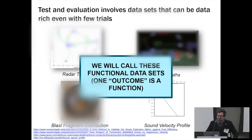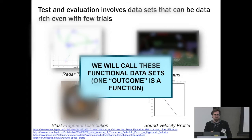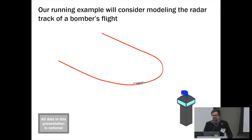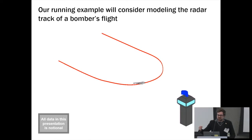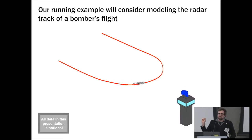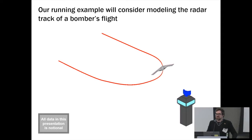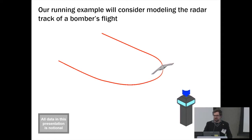I'm going to call all of these data sets today "functional" — not in the sense that the data is somehow functional, but in the sense that the data sets are understood to be mathematical functions, where you stick in inputs and get outputs out. My running example today is modeling the radar track of a bomber's flight. The bomber comes in, does a turn, and flies out. We have a radar tracking the bomber's position, sending out radar pulses, getting returns back, and determining how far away the object is. All the data in this presentation is completely notional — I made it all up.